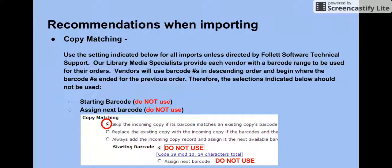For copy matching, use the setting indicated below for all imports unless directed by Follett technical support. Our library media specialists provide each vendor with a barcode range to be used for their orders. Vendors will use barcode numbers in descending order and begin where the barcodes ended for the previous order. Therefore, do not use Starting Barcode or Assign Next Barcode. Instead, for copy matching, select Skip the incoming copy if its barcode matches an existing copy's barcode.